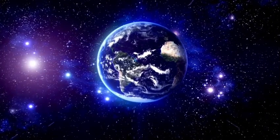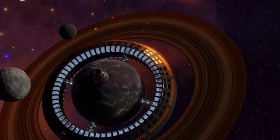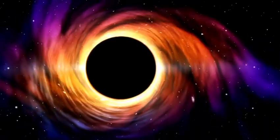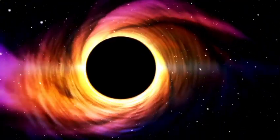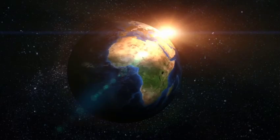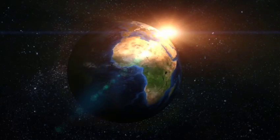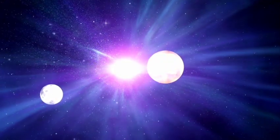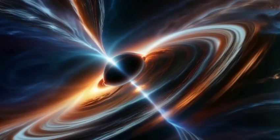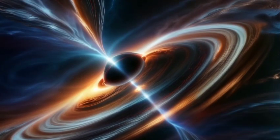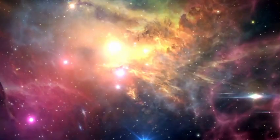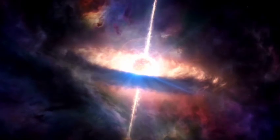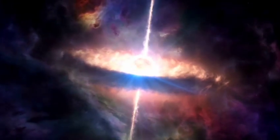While Proxima b has captured the imagination of scientists and the public alike, it is only one of many promising exoplanets. The TRAPPIST-1 system, located 40 light years away, is another focal point in the search for life. This system contains seven Earth-sized planets, three of which reside in the habitable zone of their ultra-cool red dwarf star. Unlike Proxima b, which is subject to extreme radiation, the TRAPPIST-1 planets may have more stable environments. Some scientists speculate that these worlds could have thick atmospheres, oceans, and even conditions suitable for life. The James Webb Telescope is now studying the TRAPPIST-1 planets in detail, searching for atmospheric components that might hint at biological activity.